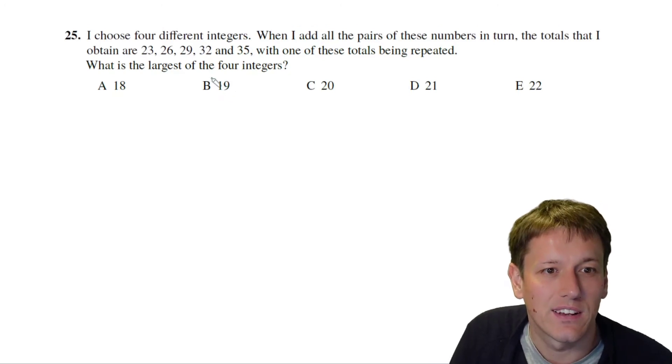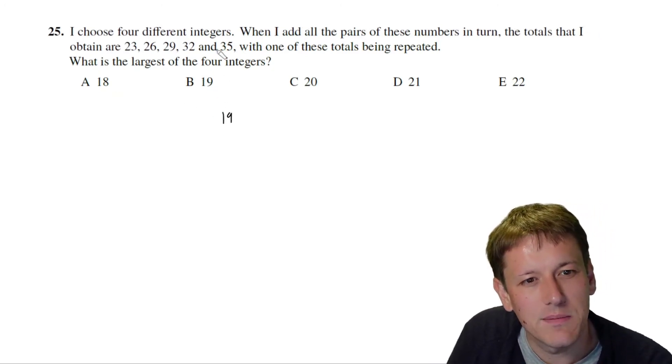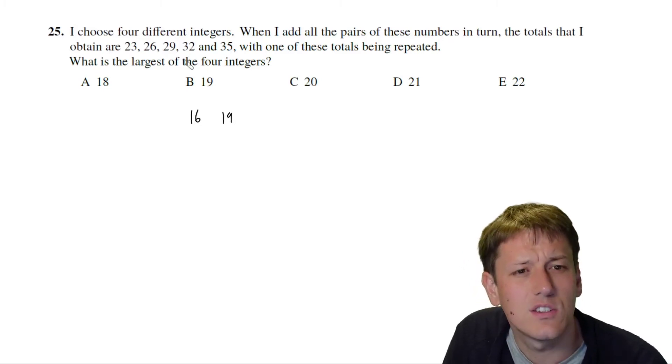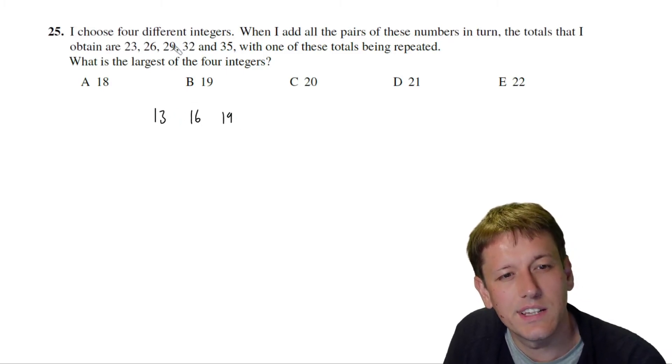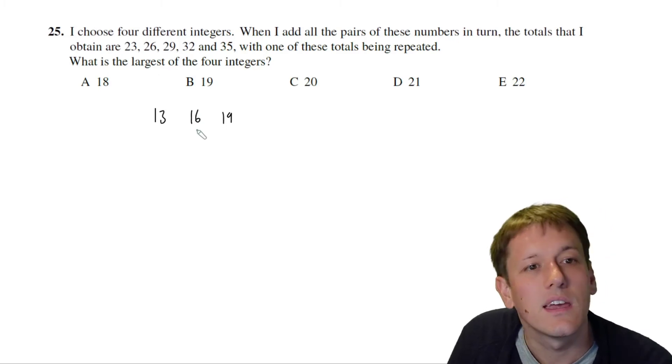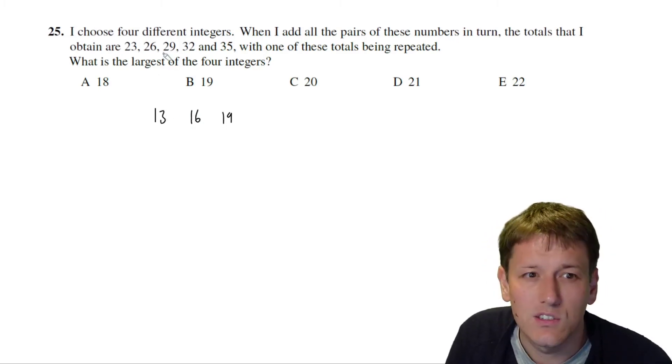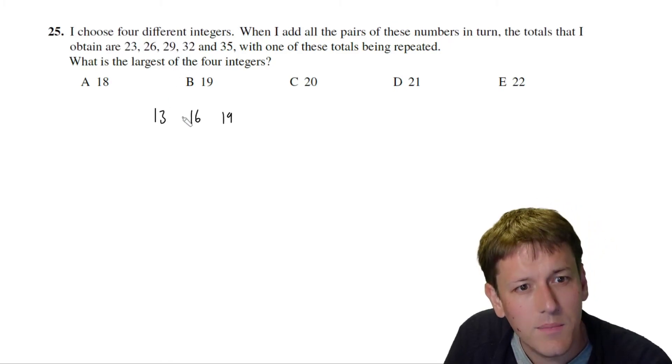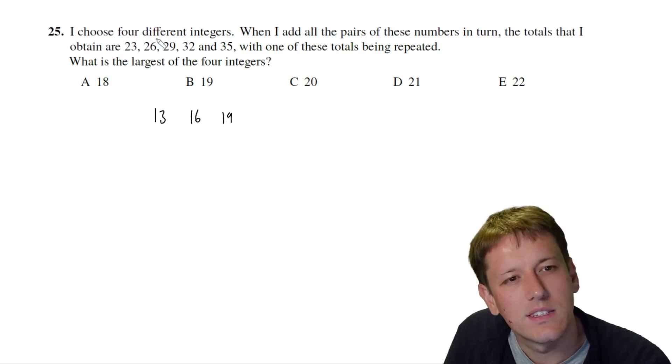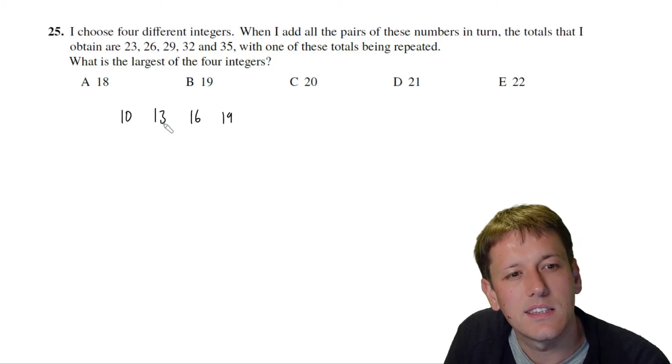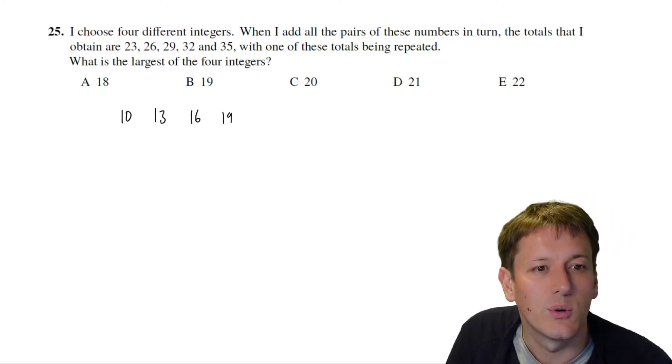So let's now check 19, right? And if I do this, I say okay, well if 19 is the biggest, the next biggest is going to have to be 16, because 19 plus 16 is 35. So to get the 32 here, well I can't have 16 twice, but I could do 19 plus 13, and 19 plus 13 gives 32. Okay, and this time 13 and 16 do give the 29. So now I can try and get the 26, and I could say I could do 19 plus 7, but 7 plus 13 then isn't one of the totals. I could do 16 plus 10, and then 10 plus 13 gives 23.